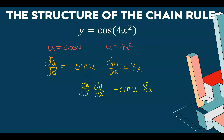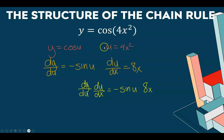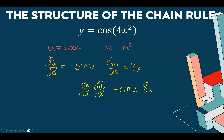So just to remember: if we were going to find the derivative of cosine of 4x squared, the overall structure is we're doing cosine of something — cosine of u. That something is 4x squared. The derivative of cosine of something is negative sine of that same something. So cosine has a u inside, sine has a u inside. And the derivative of our something — the derivative of 4x squared — is 8x. So to find that derivative, we're multiplying dy/du times du/dx. Negative sine of u is dy/du, and 8x is du/dx.